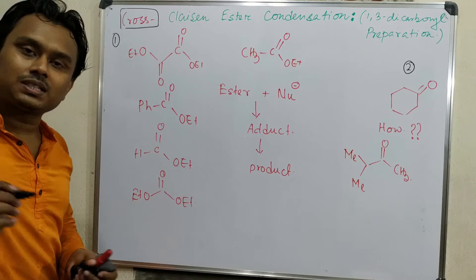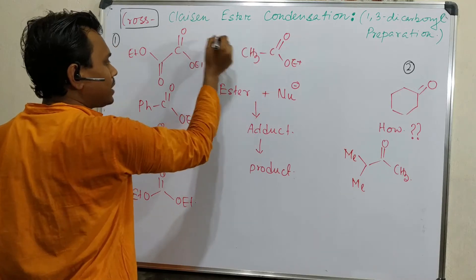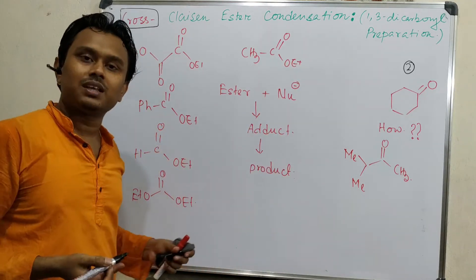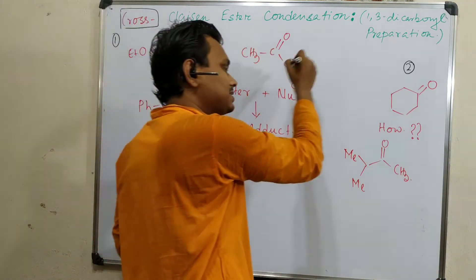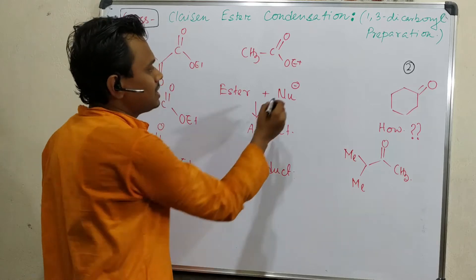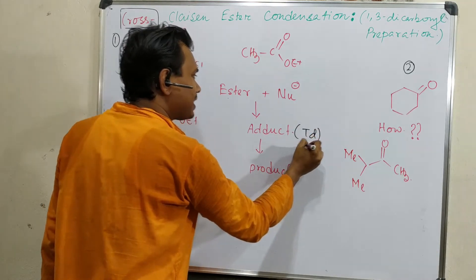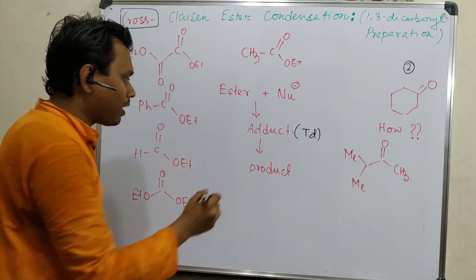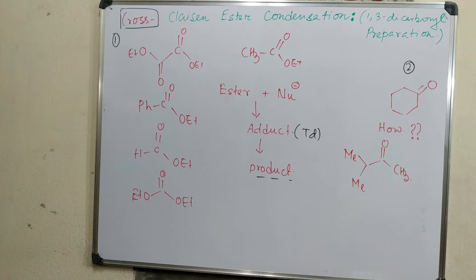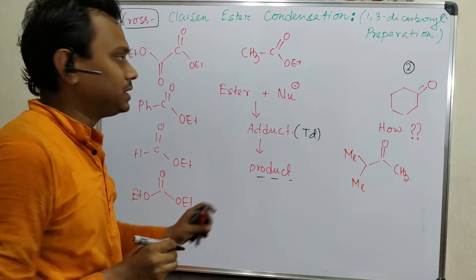Today mainly we will discuss two points. First, cross-Claisen between two esters — for example, one ester and ethyl acetate as another ester. Second, one ester versus one ketone. The main overview of Claisen condensation is that the nucleophile reacts with the ester to form a tetrahedral intermediate, which then eliminates the alcohol part to produce the beta-keto product.